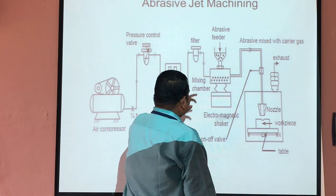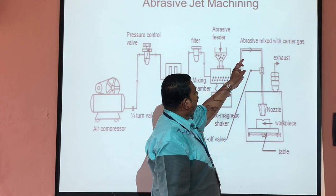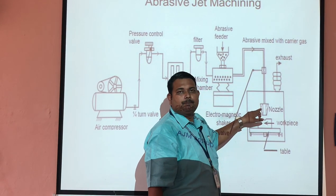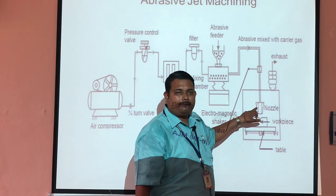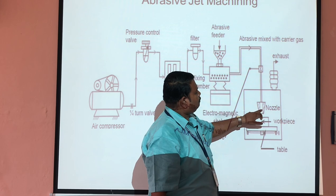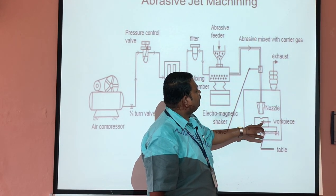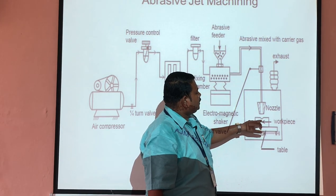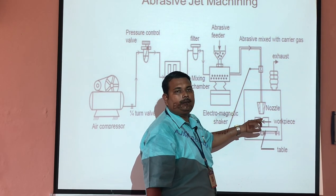After the mixing chamber, the air and abrasive mixture flows through the nozzle. The nozzle is made of very hardened material — tungsten carbide or sapphire. Through this nozzle, the abrasive powder flows at high velocity and impinges on the given workpiece. Due to the impingement of the abrasive particle on the workpiece, metal removal takes place.